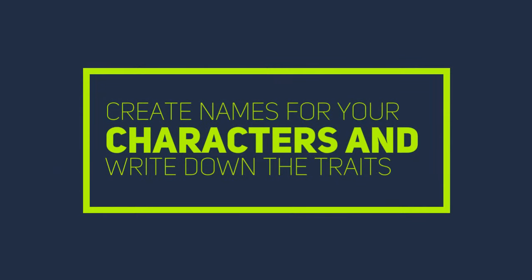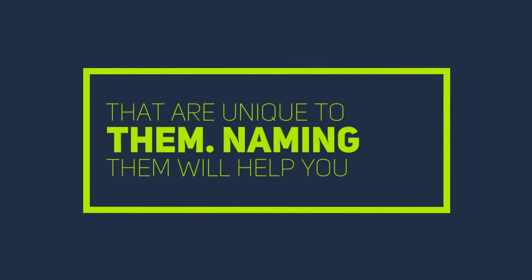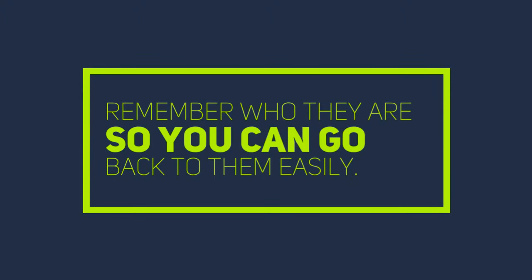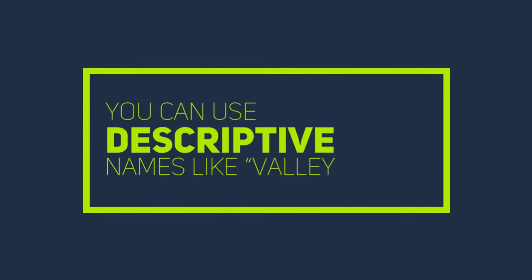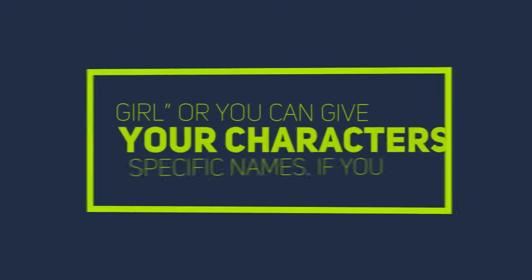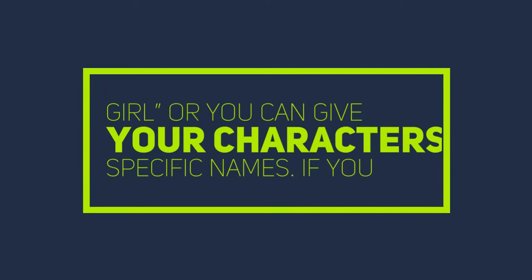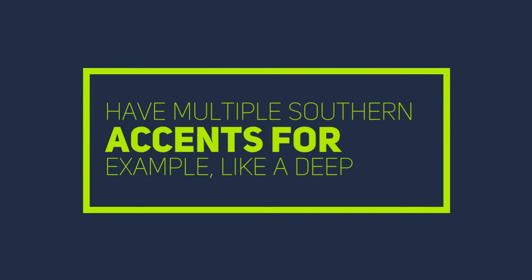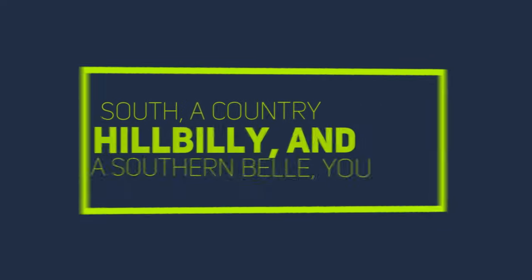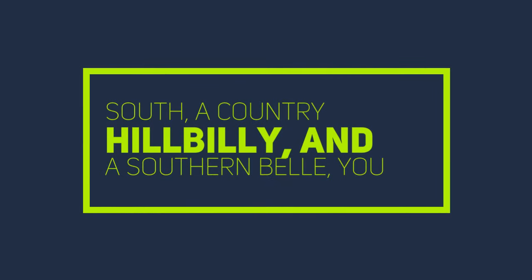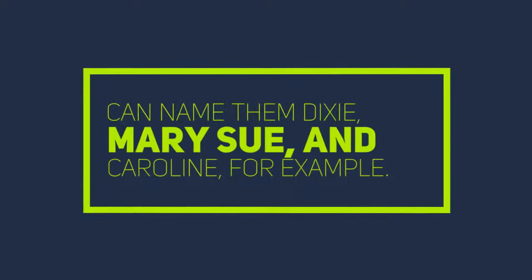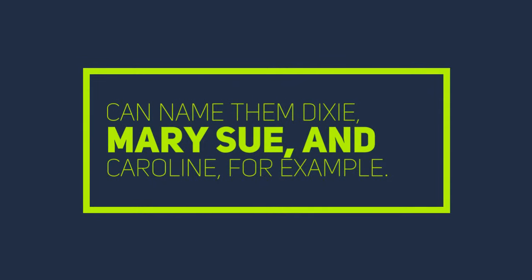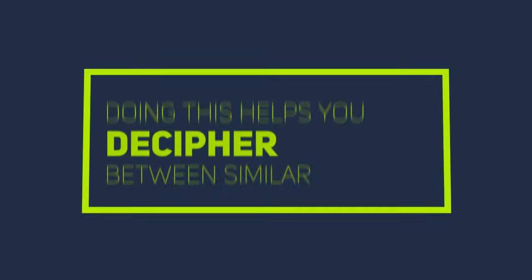Create names for your characters and write down the traits that are unique to them. Naming them will help you remember who they are, so you can go back to them easily. You can use descriptive names like Valley Girl, or you can give your characters specific names. If you have multiple southern accents, for example — like Deep South, a country hillbilly, and a southern belle — you can name them Dixie, Mary Sue, and Caroline. Doing this helps you decipher between similar characters.